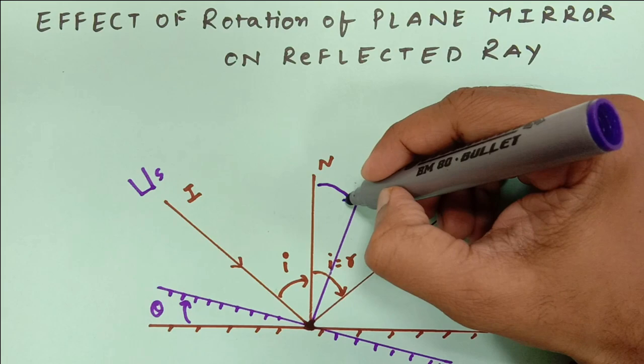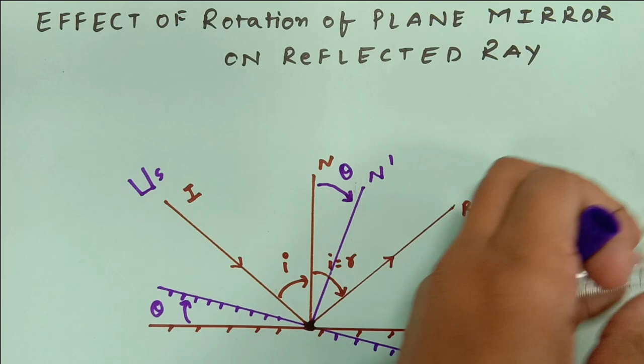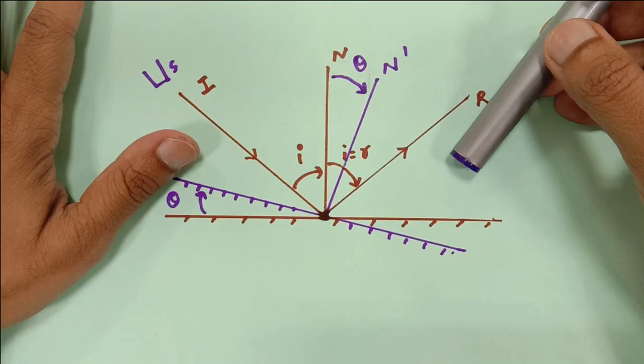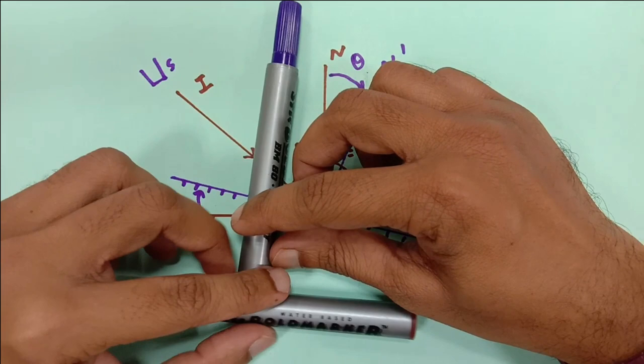The normal has shifted, and it is obvious that this angle is also theta. Look at this small demonstration — these are two marker pens, this is my plane mirror, and this is the normal.